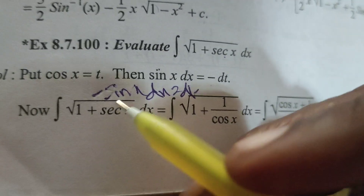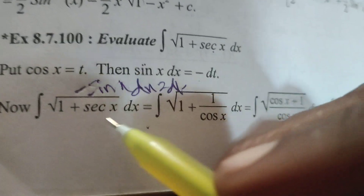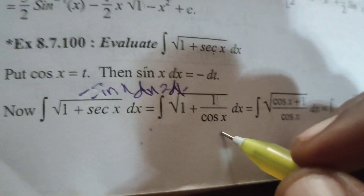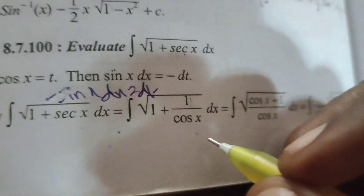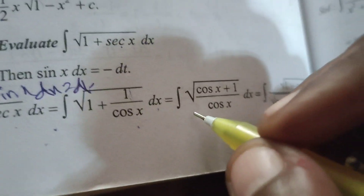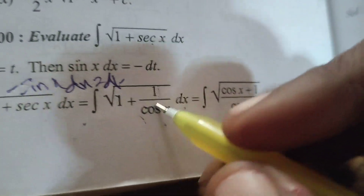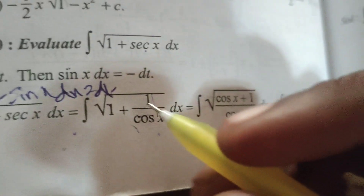Now our problem is the integral of root of 1 plus sec x dx. In place of sec x, write 1 by cos x by the trigonometric formula. Simplify this as root of (cos x plus 1) by cos x, in place of dx.